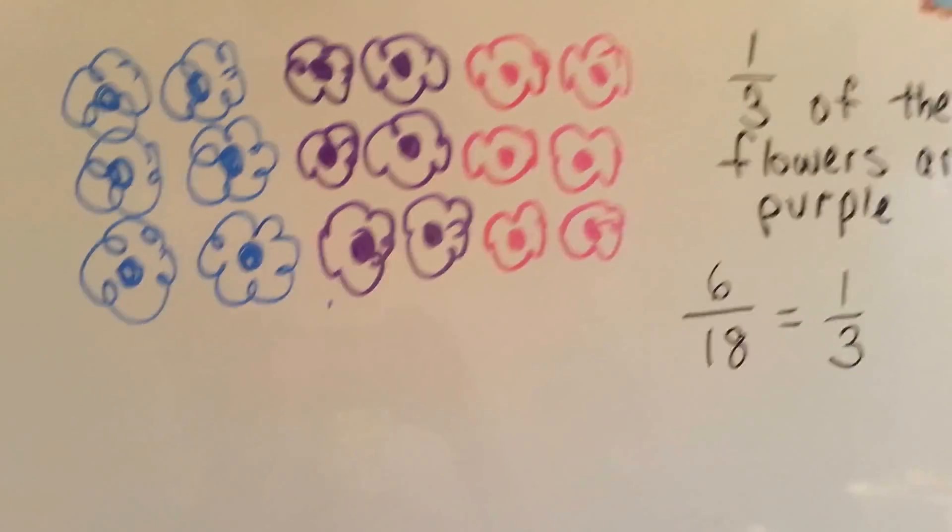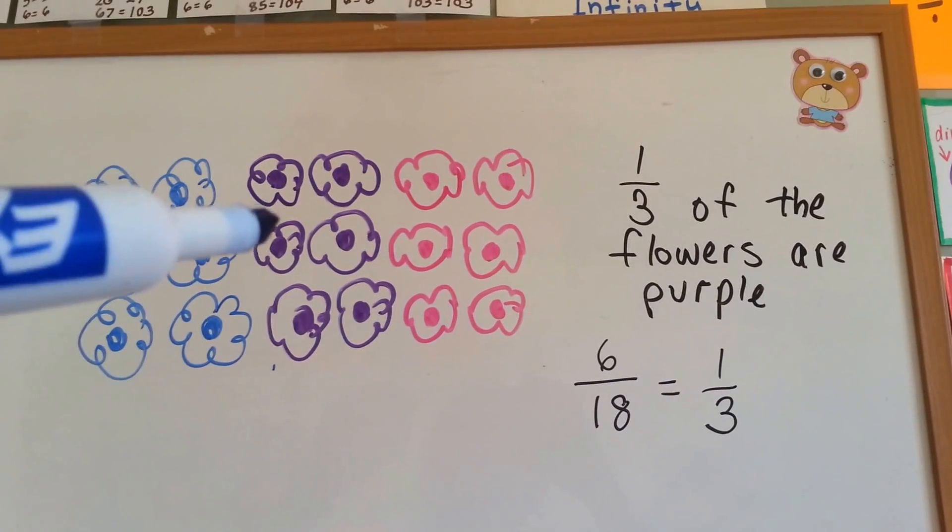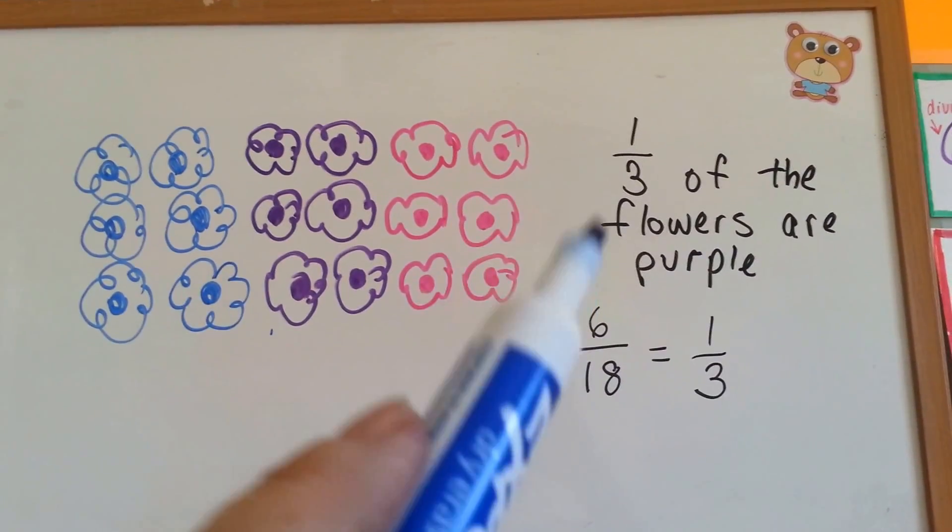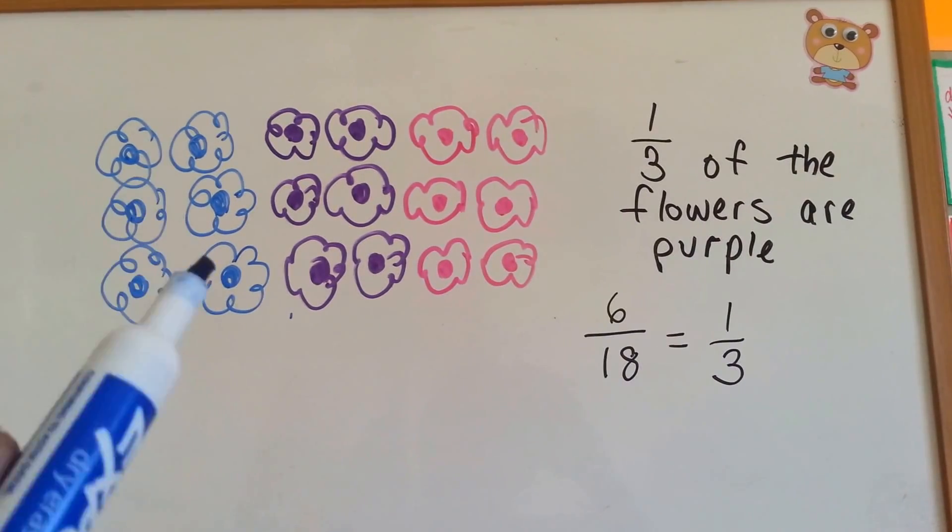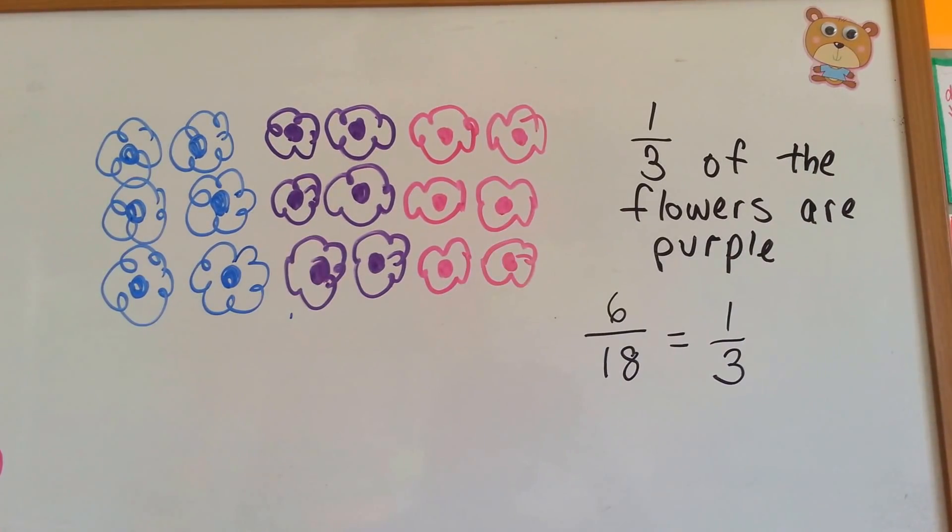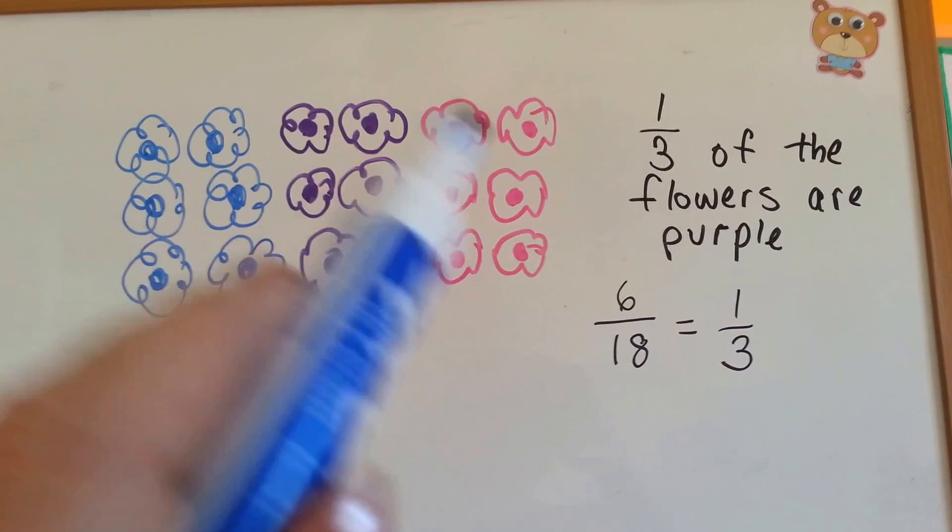Okay, let's try it again. We've got six blue flowers, six purple flowers, and six pink flowers. One-third of these flowers are purple. You've got a group of six, a group of purple, and a group of pink. Six of a total of eighteen flowers.